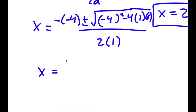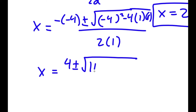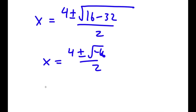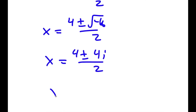This equals 4 plus or minus the square root of 16 minus 32 over 2, which equals 4 plus or minus the square root of negative 16 over 2, which equals 4 plus or minus 4i over 2, which equals 2 plus or minus 2i.